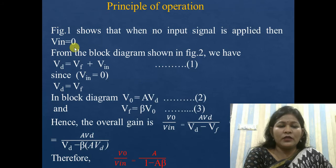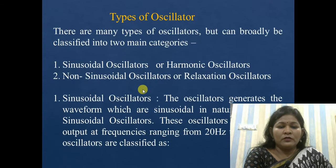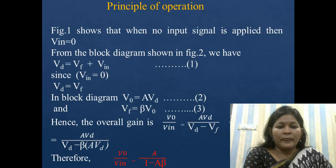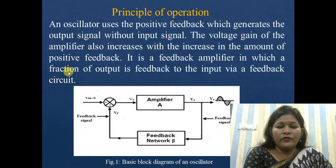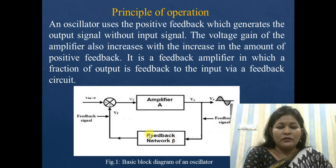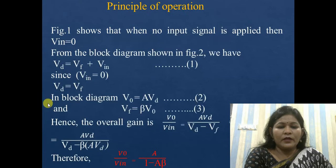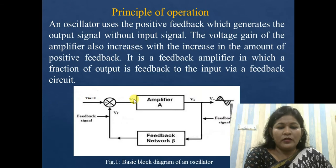According to the block diagram, since no input signal is applied, Vin = 0. From the block diagram, Vd = Vf + Vin, where V0 is the amplifier output, Vf is the feedback voltage, and Vd is the difference voltage. Since Vin = 0, this simplifies to Vd = Vf.